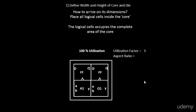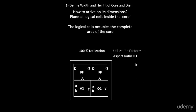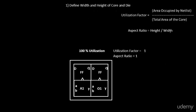Another concept is the aspect ratio, defined as height divided by width. In this case, the height of the core is 2 units and the width is 2 units, so the aspect ratio is 1. Whenever the aspect ratio is 1, it signifies the chip is square-shaped. Whenever the aspect ratio is some other number, it signifies the chip is rectangular. The utilization factor is area occupied by the netlist divided by total area of the core, and the aspect ratio is height by width.